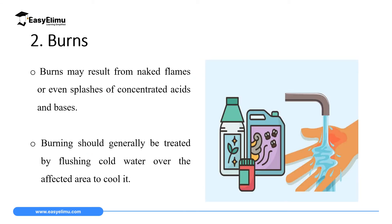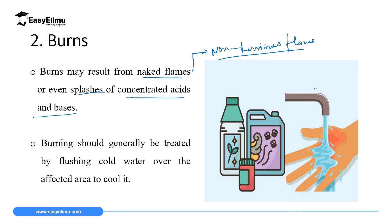The second common injury and accident in the laboratory is burns. Burns might result from naked flames — in chemistry you discussed luminous and non-luminous flames. If you are careless in the laboratory it might result in a burn. Burns can also be caused by a splash of concentrated acids and bases, which are very dangerous chemicals that can burn seriously. Immediately after a burn, you flash cold water over the affected area to cool it.